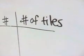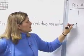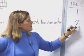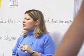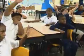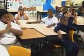For pile number one — way back on pile number one — raise your hand. How many tiles were in pile number one? Six. Pile number two, raise your hand. How many tiles in pile number two? Ten. Pile number three. Fourteen.